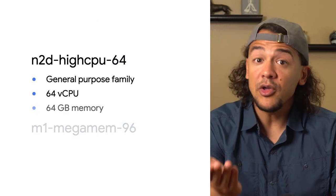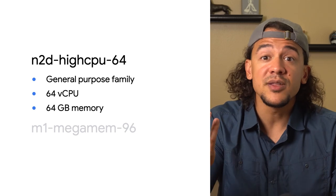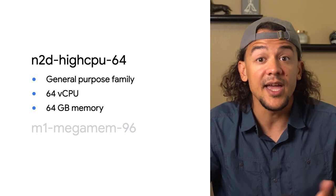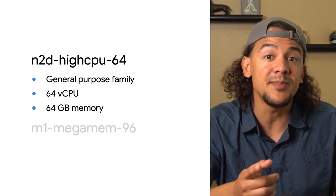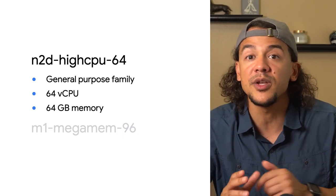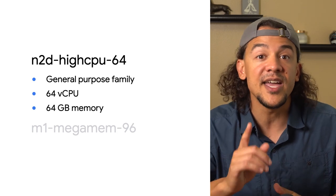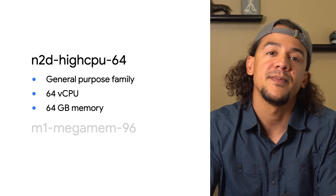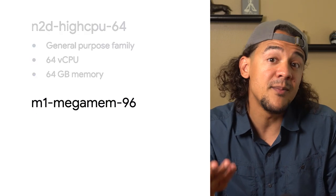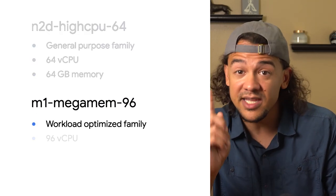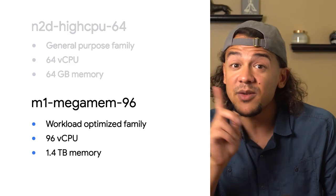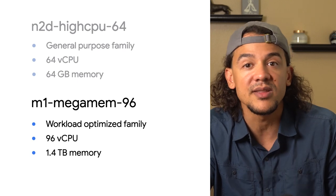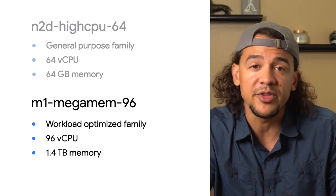So you can deduce that an N2D High CPU 64 has 64 virtual CPUs, and as part of the high CPU type, it has a one virtual CPU to one gigabyte of memory ratio in the N2D series, which is in the general-purpose family. In contrast, the M1 MegaMem 96 has 96 virtual CPUs, and it has a higher ratio of memory because it's in the memory-optimized family of M1 machines, which is a workload-optimized family.